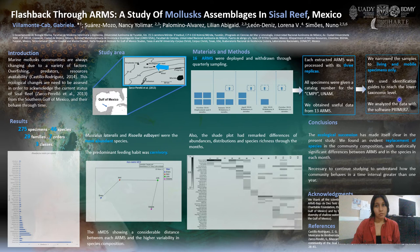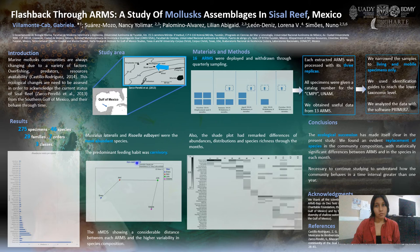We used identification guides and analyzed the data with the software Primer 7. As a result, we worked with 275 specimens and identified 46 species, 29 families, 7 orders, and 3 classes. Our most abundant species were the bivalve Musculus lateralis and the gastropod Rissoella balleri, and the primary feeding habit was carnivory.